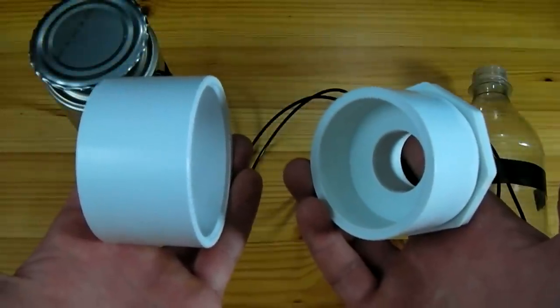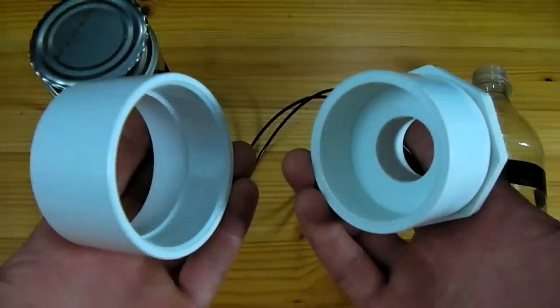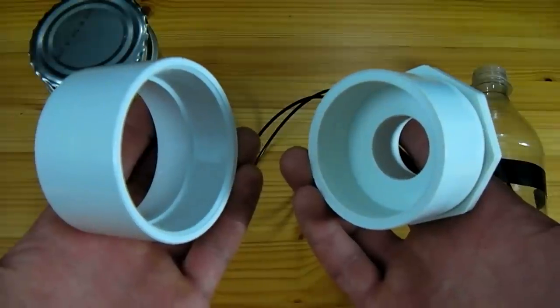Two PVC fittings go over the end of this bottle when it's loaded. These two fittings are what will be filled with the powder that will coat our enemy.